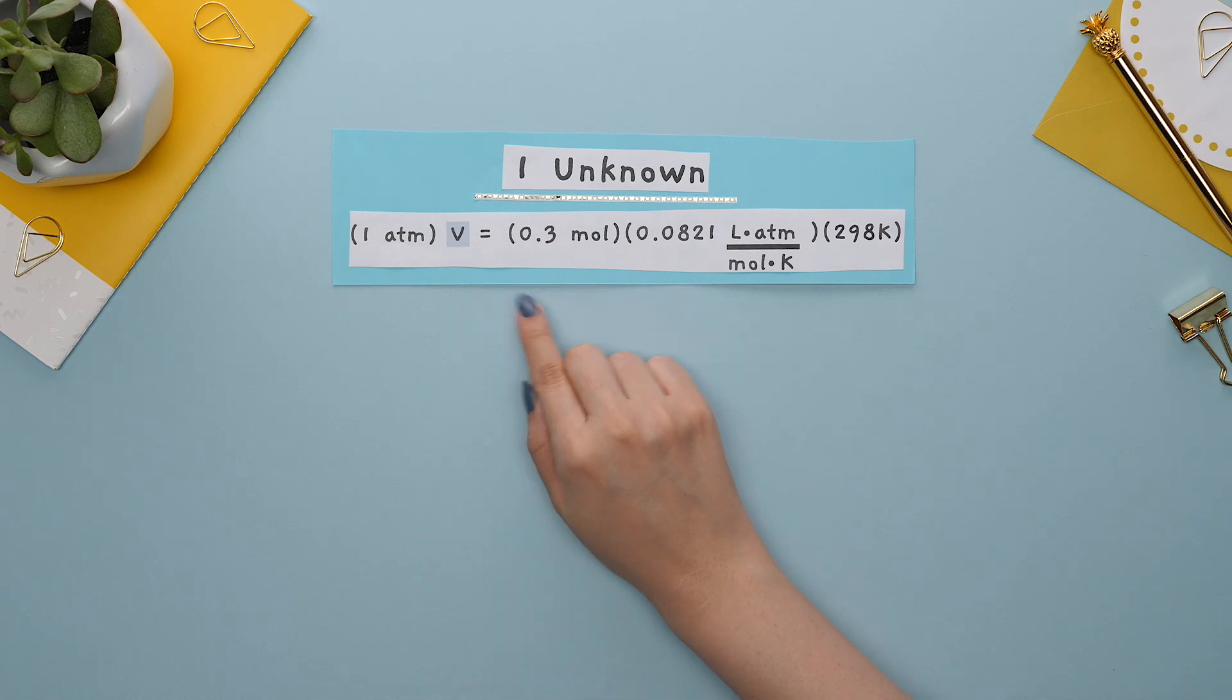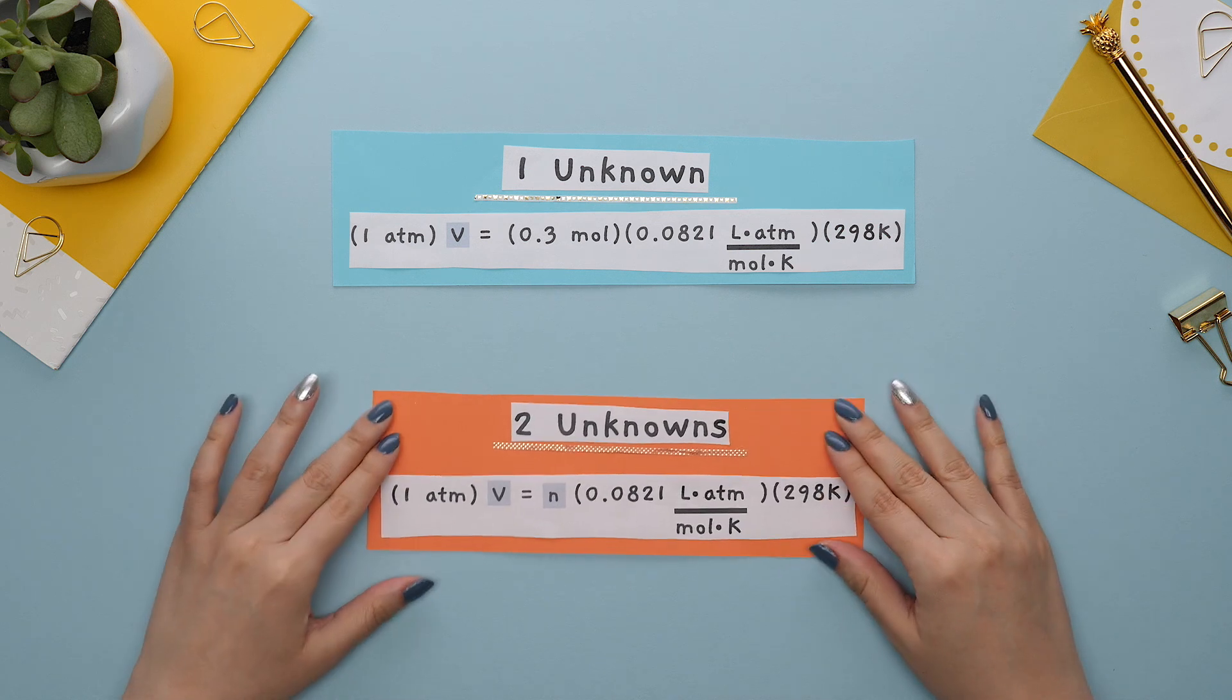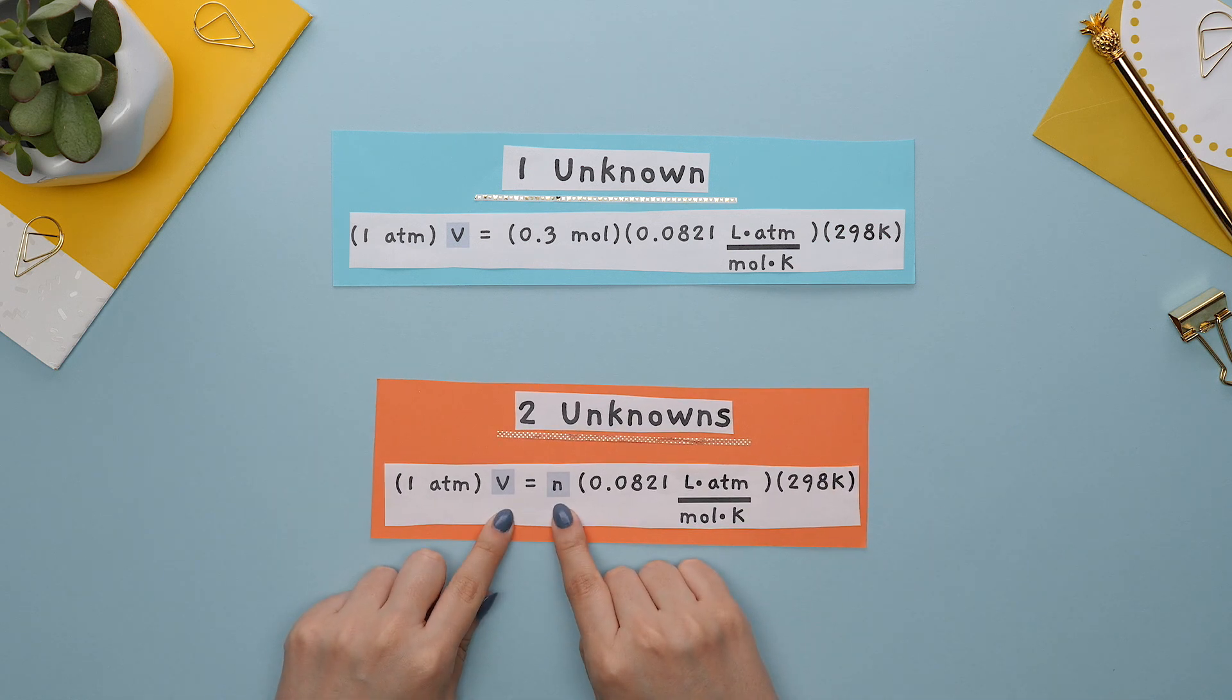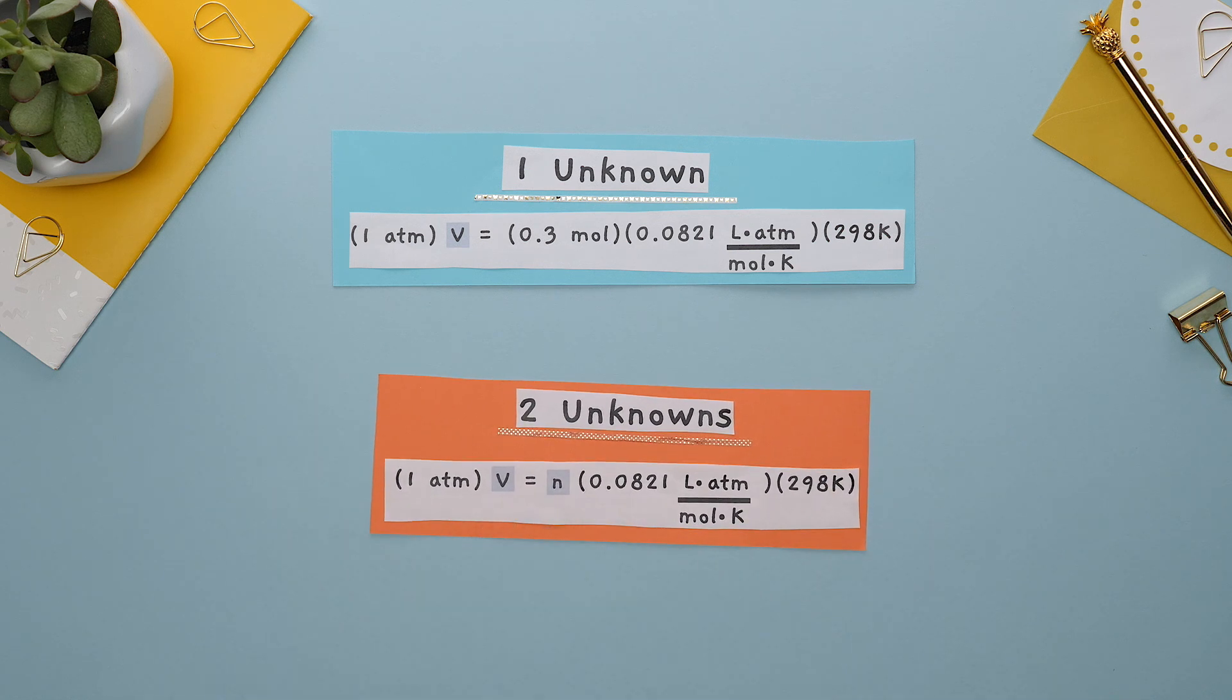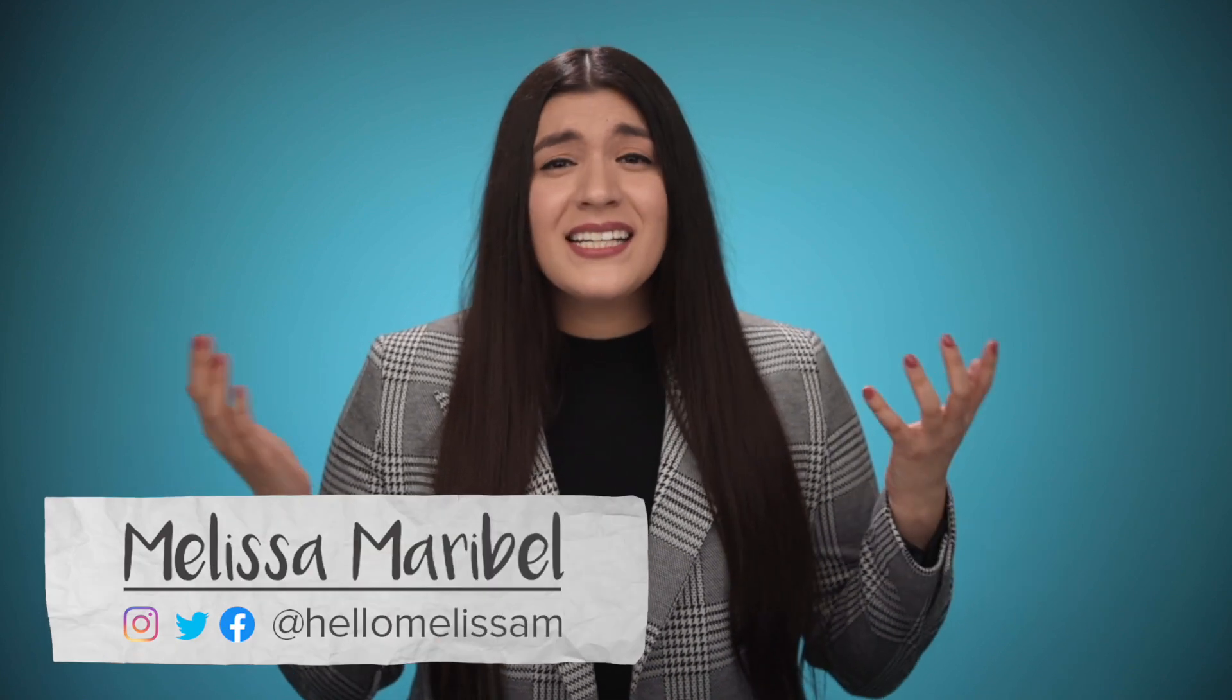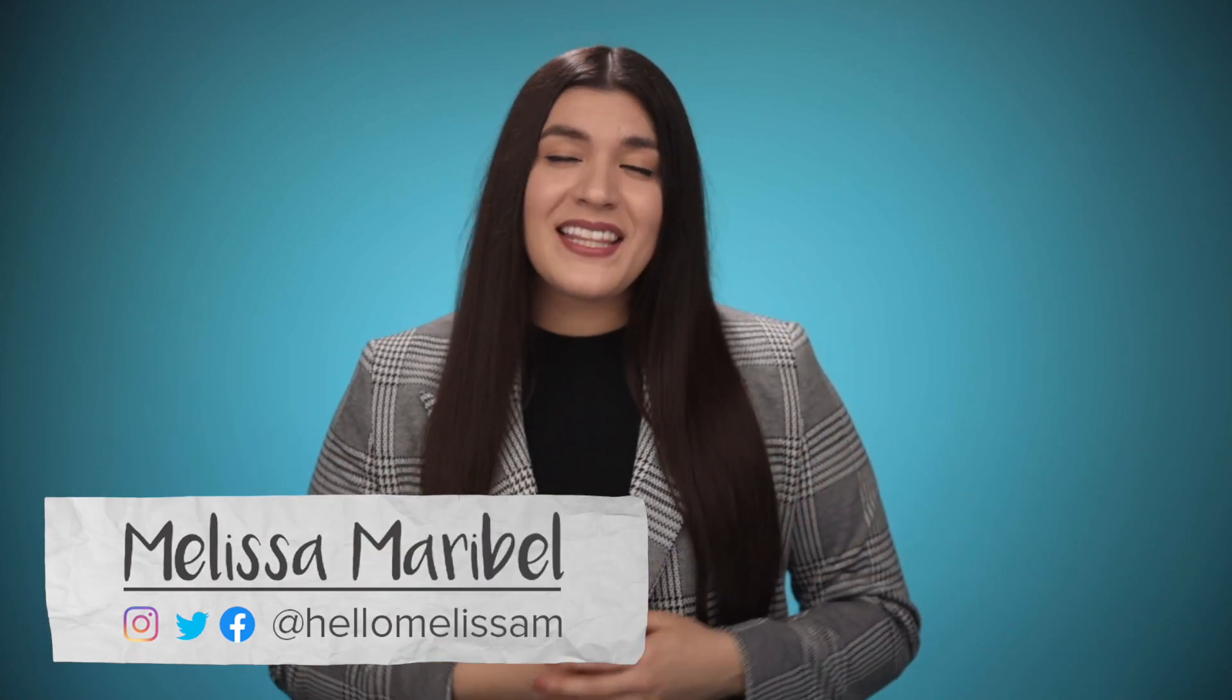You now have some experience solving for one variable within an equation, but what do you do if there are two or more unknown variables within the same equation? How can you solve this? That's exactly what we'll be covering in this video.